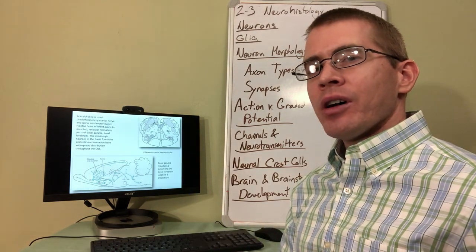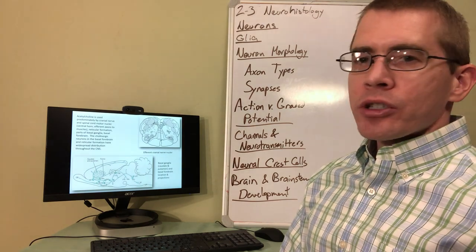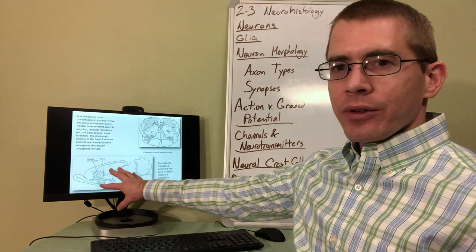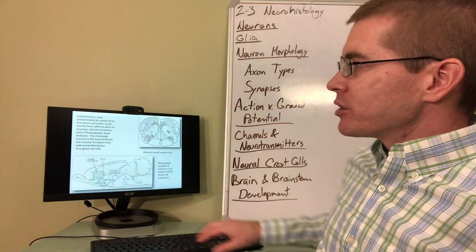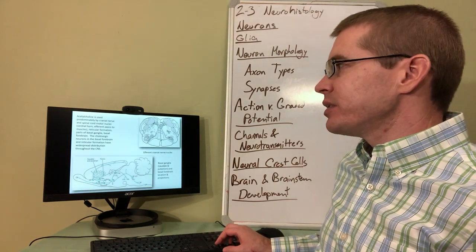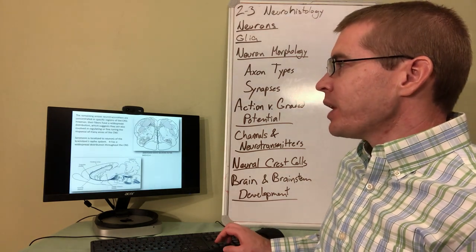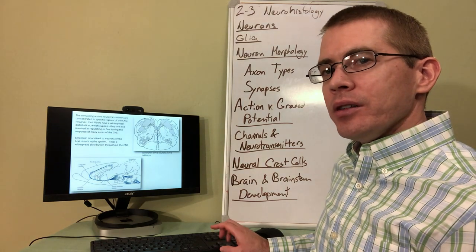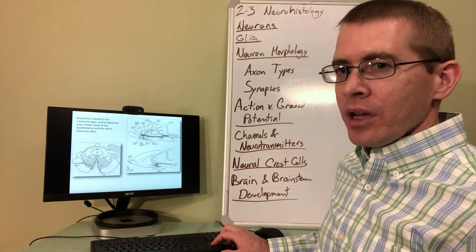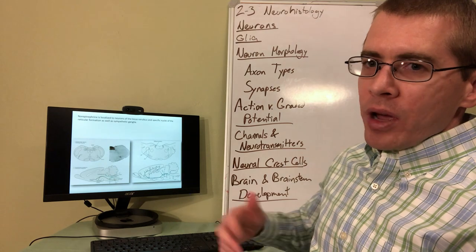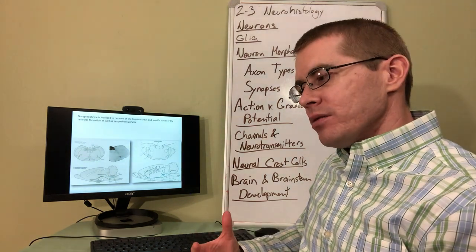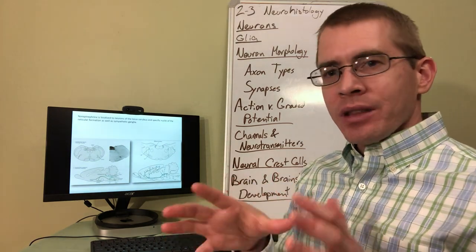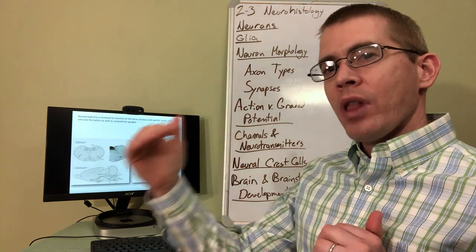The next few slides talk about different types of neurotransmitters. Again, I don't want you to memorize anything from these slides right now — as we get more into the CNS lectures you'll understand the importance of these different brain regions. Just understand that a multitude of different neurotransmitters exist: acetylcholine, serotonin — important for regulating activity of the central nervous system — as well as dopamine and norepinephrine, critical for maintaining wakefulness, arousal, and attention. We'll talk about all of these neurotransmitters later.